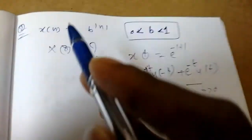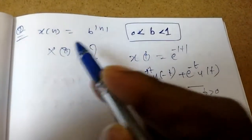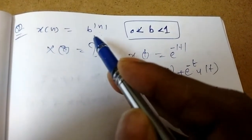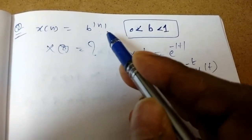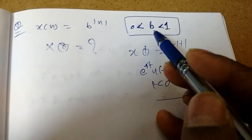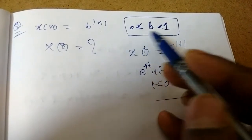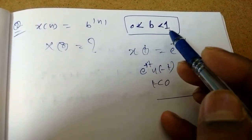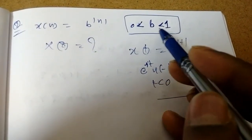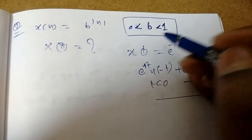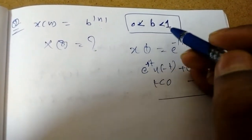I am going to solve a few problems on Z transform. X of n is equal to b power mod n, where b is between 0 and 1.